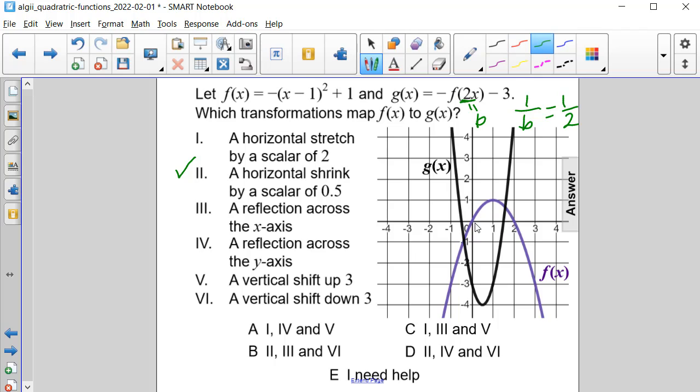And if we do that, it will still intersect the origin, but this new maximum will not be at (1, 1). It will be at (1/2, 1), and our x-intercept at 2 will be at 1 instead. We will still have the x-intercept at the origin. So that is what the function would look like after that horizontal shrink.